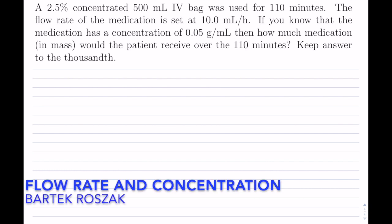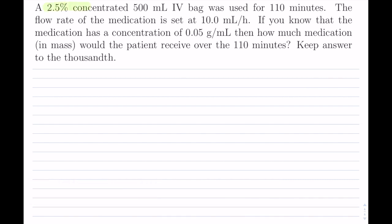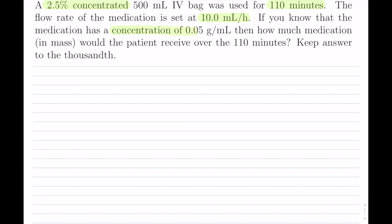A 2.5% concentrated 500 milliliter IV bag was used for 110 minutes. We have a concentration of 2.5% and we have been running this for 110 minutes. The flow rate of the medication is set at 10 milliliters per hour. If you know that the medication has a concentration of 0.05 grams per milliliter, then how much medication in mass would the patient receive over that time spent?